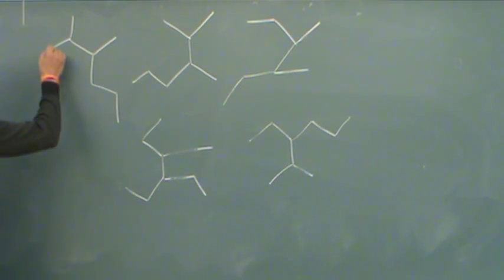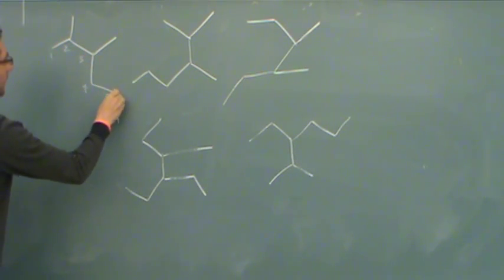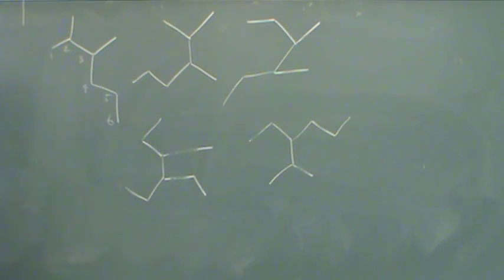So for example, this one, the long chain: 1, 2, 3, 4, 5, 6. That's a hexane. And it's a 2, 3... if you number it, 5, 6... a 2, 3-dimethyl hexane.